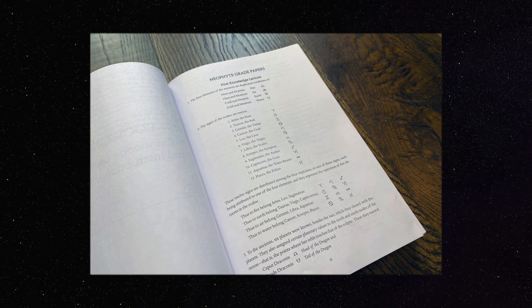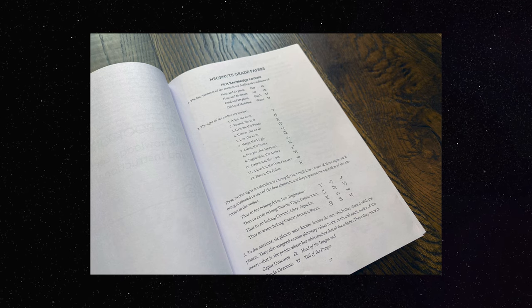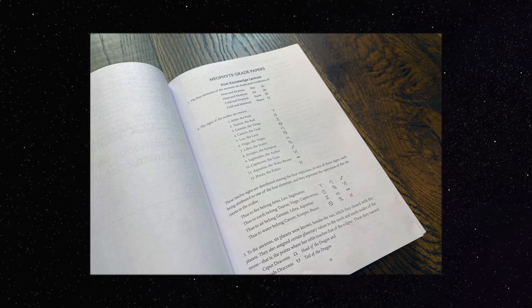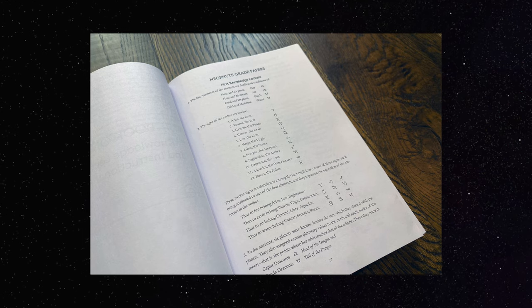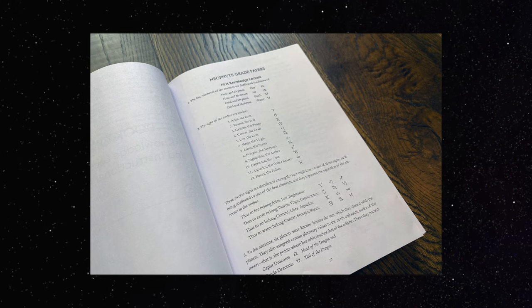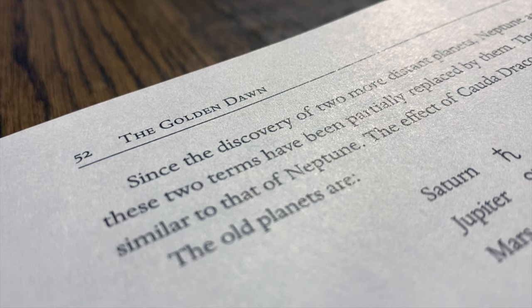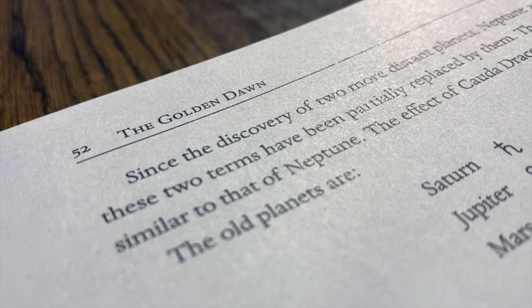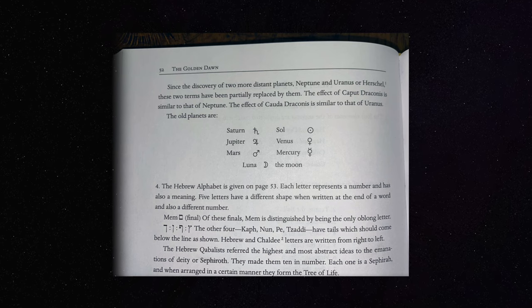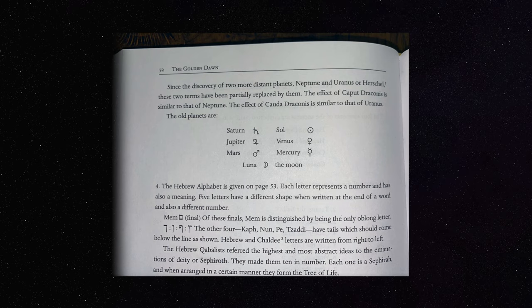Three: to the ancients, six planets were known, besides the sun, which they classed with the planets. They also assigned certain planetary values to the north and south nodes of the moon. That is, the points where her orbit touches that of the ecliptic. These they named Caput Draconis, head of the dragon, and Cauda Draconis, tail of the dragon. Since the discovery of two more distant planets, Neptune and Uranus or Herschel, these two terms have been partially replaced by them.